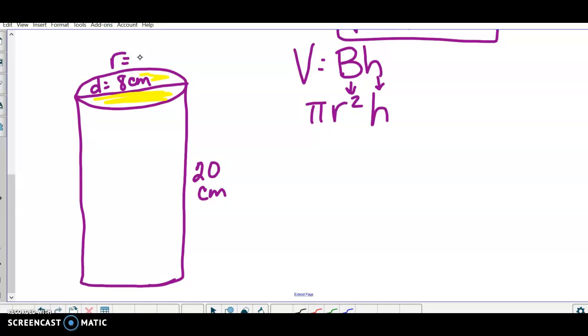Some of you were using diameter in fact when you needed to use radius the other day. Remember, radius is half of diameter. So half of eight is four. Still no multiples of seven. So 3.14 times four times four and my height is 20.